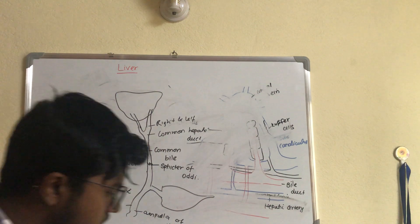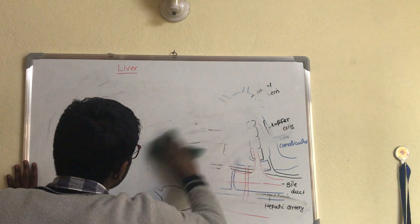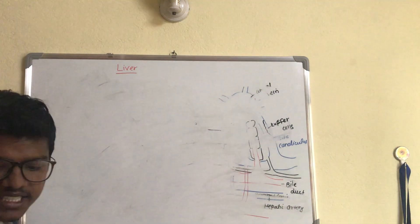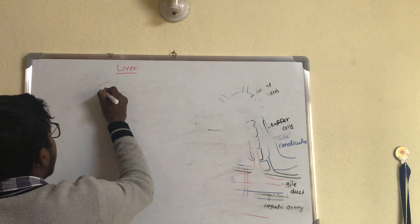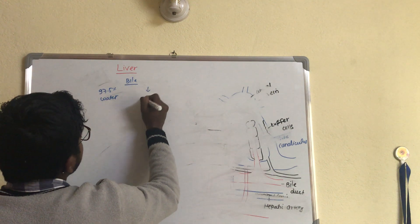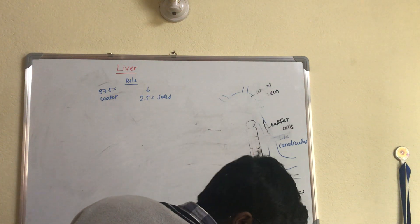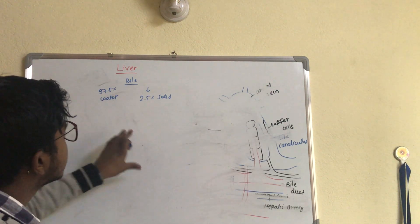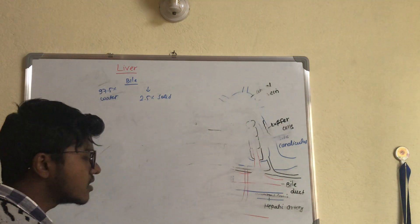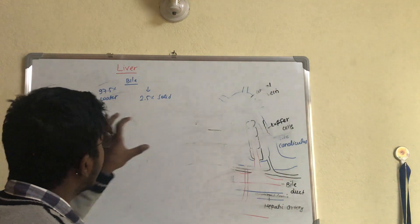Coming on to the secretions of bile — the main secretion of the liver is bile. If we see the composition of bile, it has 97.5% water and 2.5% solid. Bile is secreted by hepatocytes and contains bile pigments, bile salts, lecithin, and cholesterol. As bile passes through the ducts, sodium bicarbonate is added to it.